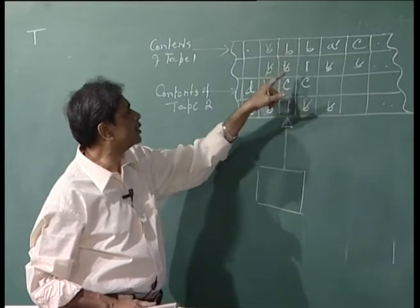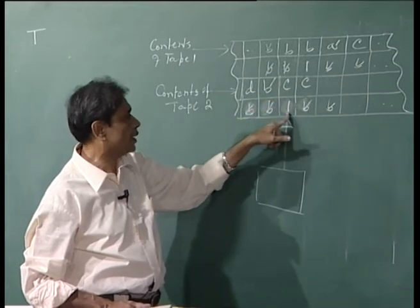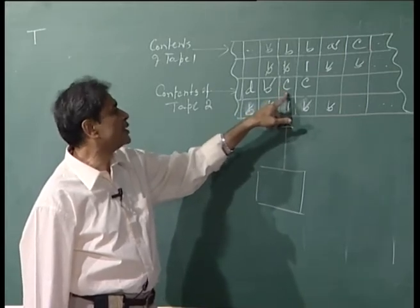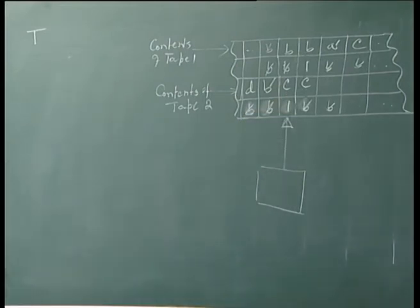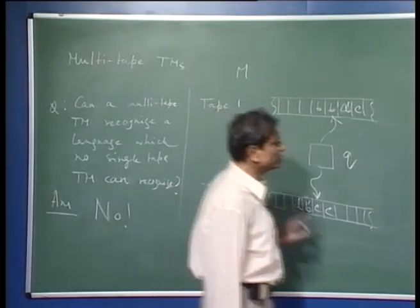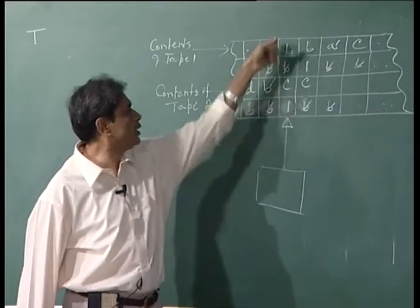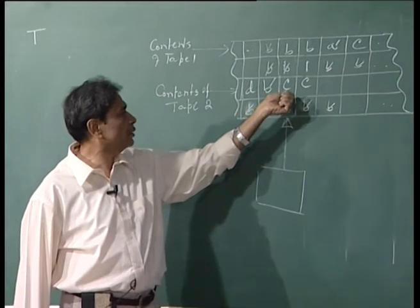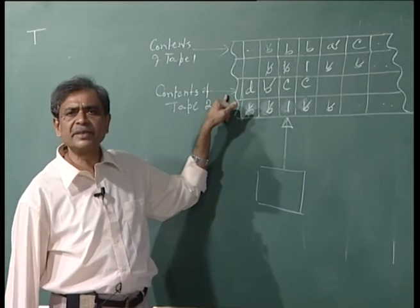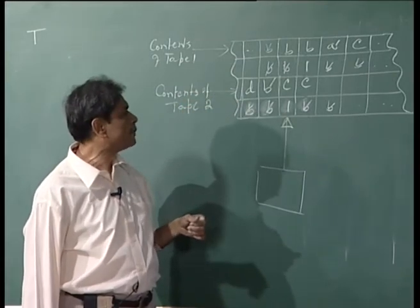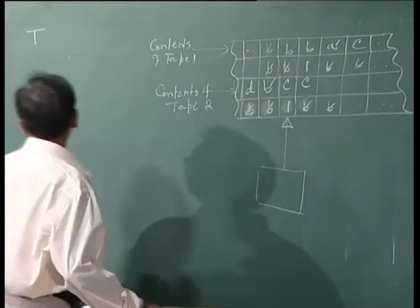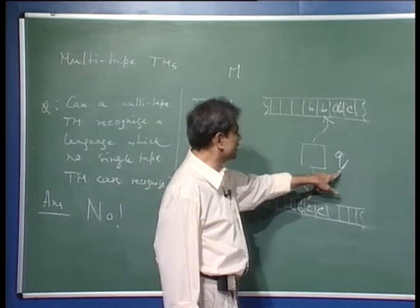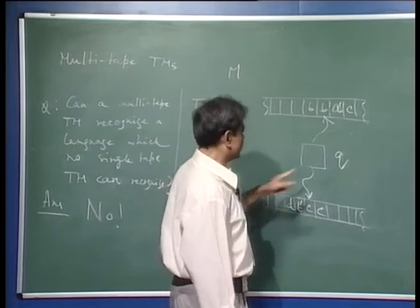T immediately knows that tape 2's head is scanning C, since track 4 has a '1' under the C on track 3. T also knows the current state of machine M — for example, Q — which is stored in T's composite finite state. So T knows state Q and symbol C from tape 2. However, it does not yet know what symbol tape 1 is scanning, so it cannot fully determine M's next move.